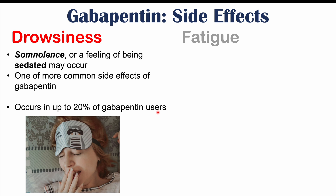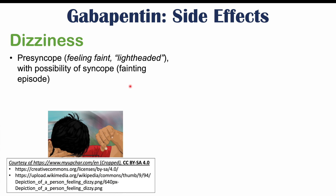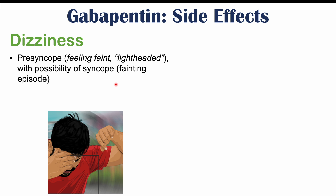Another common side effect is fatigue, which is related to drowsiness. Feeling tired and fatigued is also estimated to occur in up to 20% of gabapentin users. Dizziness can also occur, involving presyncope — feeling faint or lightheaded — with the possibility of syncope, a fainting episode, in some cases. This has also been estimated to occur in up to 20% of gabapentin users.